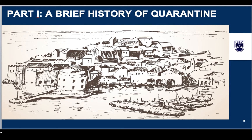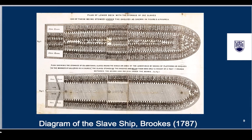After Columbus arrived in the so-called New World, and as ships began traveling more regularly across the Atlantic Ocean carrying European settlers and then captive Africans, quarantine became a growing concern. Conditions aboard slave ships and later indentured ships carrying Chinese and South Asian indentured laborers were horrific. Captive Africans who were kidnapped from West Africa and transported across the Atlantic to the Americas were chained and confined in the hold of the ship.